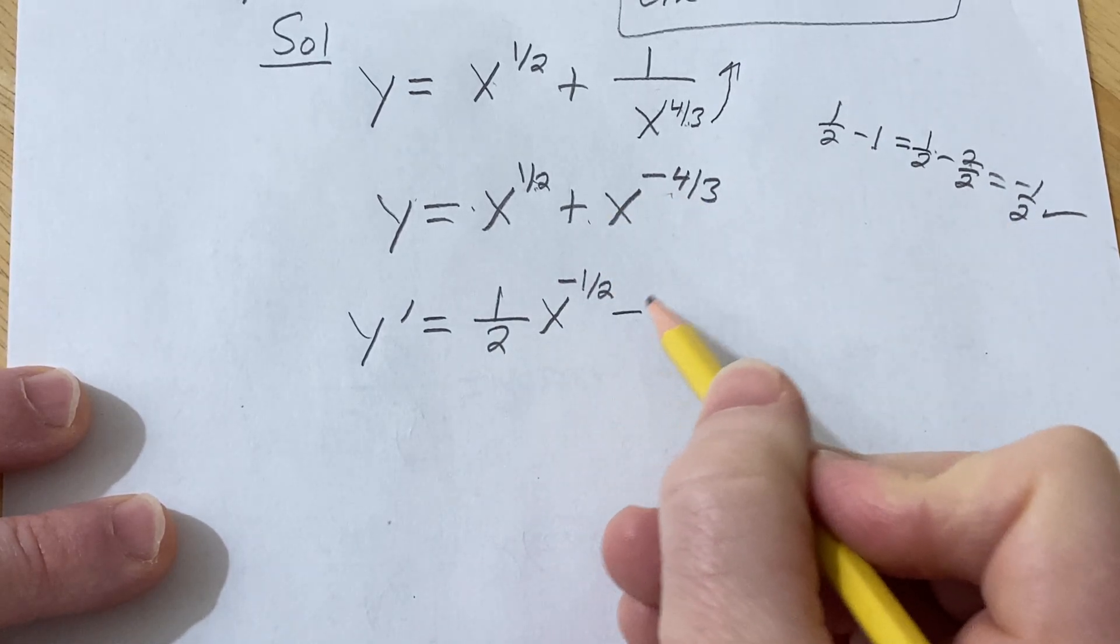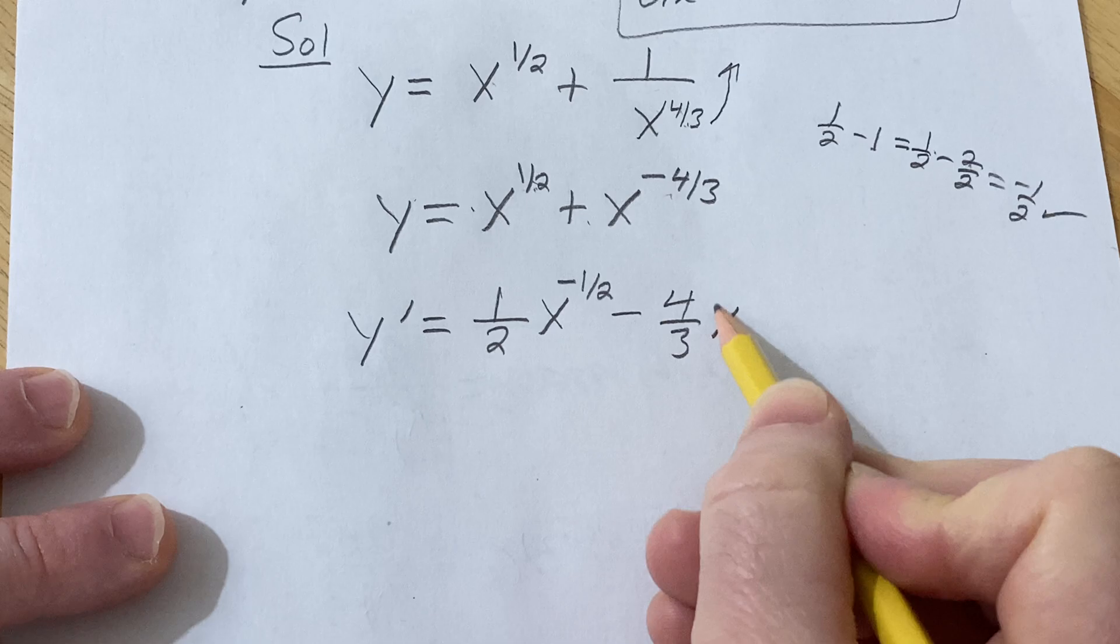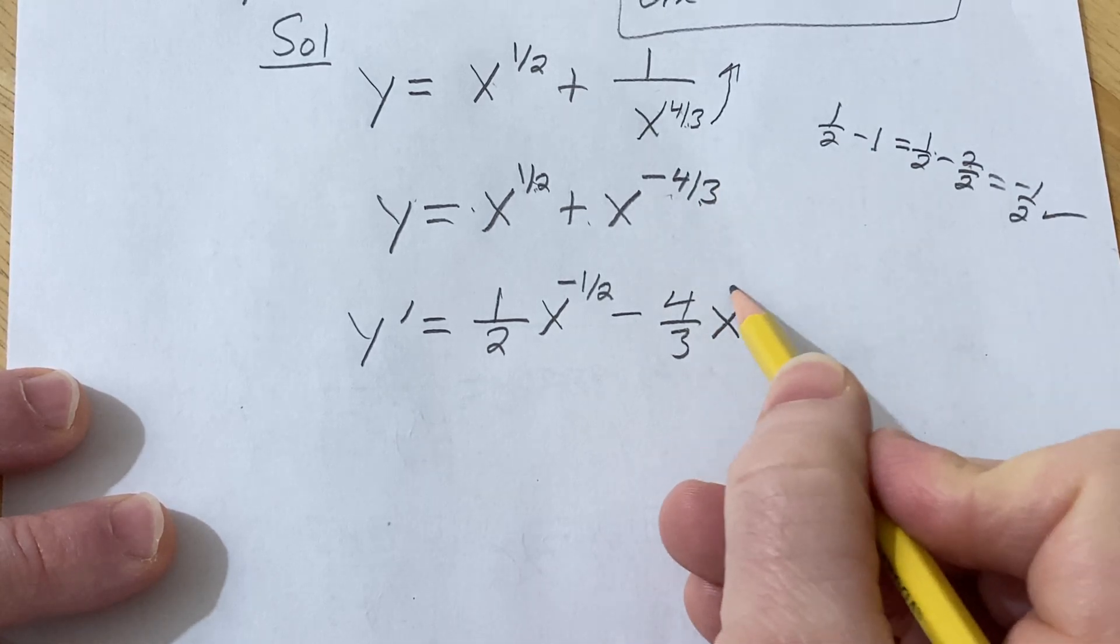Same thing here, bring down the negative four thirds. x to the negative four thirds minus one is negative seven thirds.